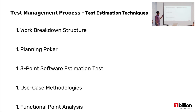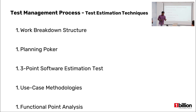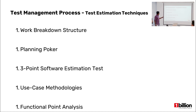The test estimation techniques we use in our CR project are work breakdown structure, planning poker, and function point analysis. With work breakdown structure, when the client delivers requirements, we break those requirements down into submodules and estimate the time for each submodule, then allocate to each individual. At the start of each sprint, we have meetings with our stakeholders and use planning poker to estimate our tasks.